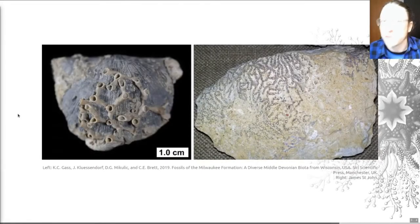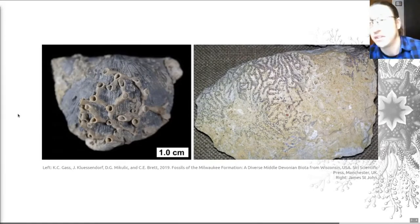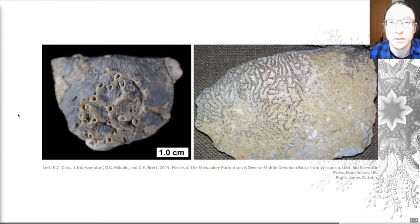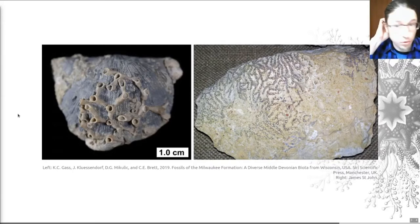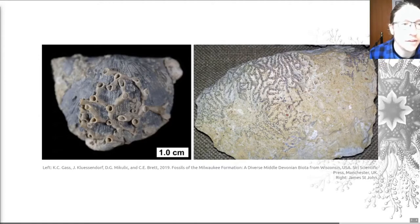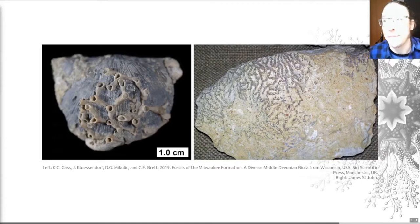I wanted to highlight that there are some forms of coral which are a bit harder to recognize until you've seen a couple of them — after that, it's relatively straightforward. On the left is a tabulate coral called Aulopora, attached to a brachiopod from the Middle Devonian of the Milwaukee Formation in Wisconsin. This is an example of an encrusting form, a typical tubular branching form seen in some tabulate coral groups. So if you ever see this in the rock record and don't know what it is, it may well be an example of these slightly unusual tabulate fossils.